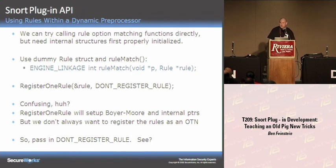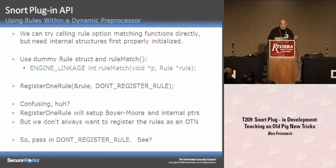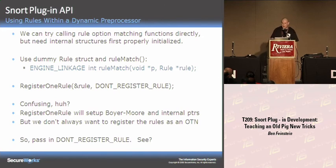When you're in a preprocessor, you can also use dynamic rules functionality. The register-one-rule callback was a little confusing to me at first — you register one rule but pass a flag called don't-register-rule. What don't-register-rule does is it doesn't add the rule into the tree of nodes, but you still have to call this function to initialize all the pointers in your structures — it sets up the Aho-Corasick structures and internal pointers. So when using rule structures inside your preprocessor, you need to register them but not register them.